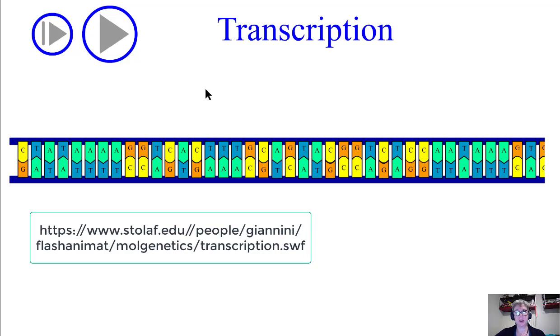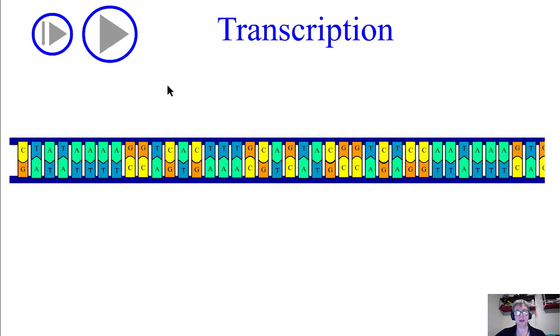In this video we're going to be looking at the processes of transcription and then translation. Transcription is where we take a DNA sequence from a gene and make a messenger RNA copy of that gene so that it can leave the nucleus and go be turned into a protein in the cytoplasm. So we're transcribing the DNA language into a very similar RNA language.